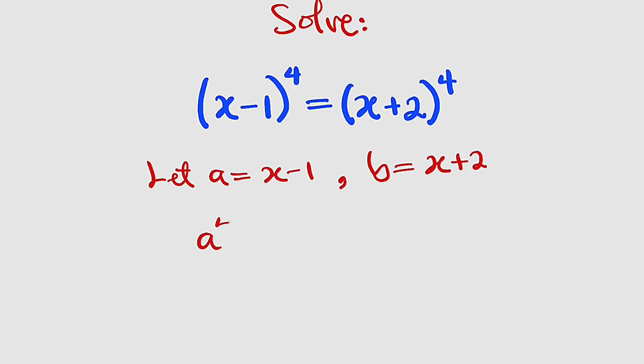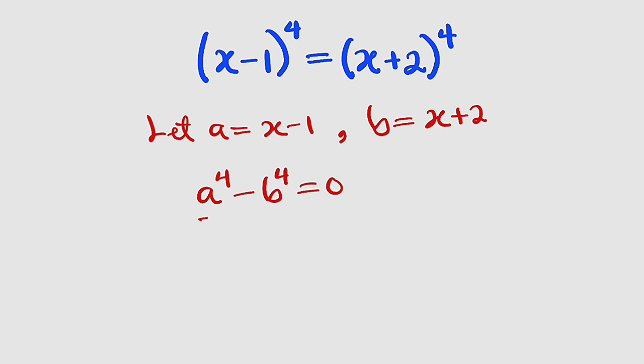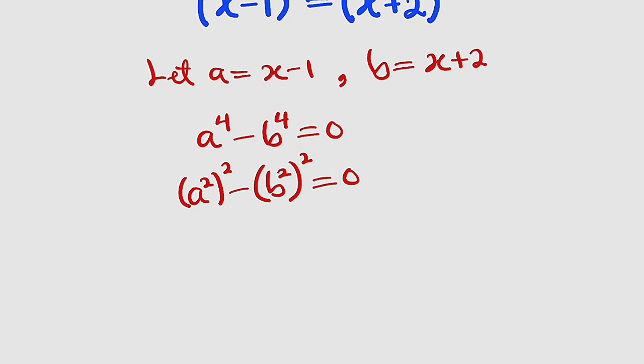So this is a to the power of 4 and you may decide to bring this one to the left which is going to make it negative b to the power of 4, and this is equal to 0. We can change this to difference of two squares because this can be written as a squared whole squared minus b squared whole squared equal to 0.